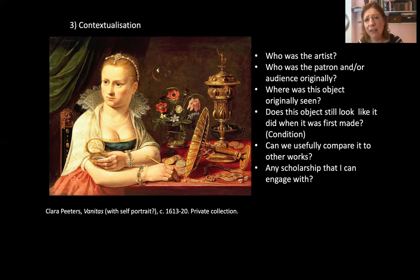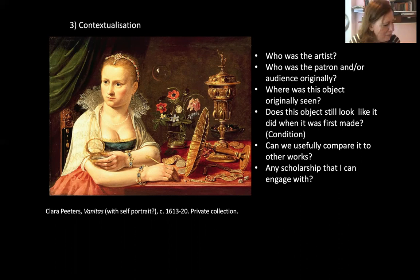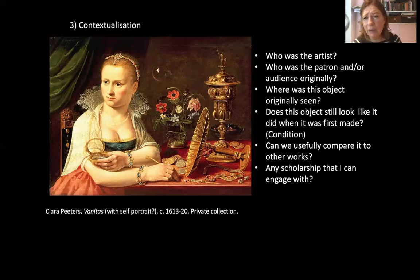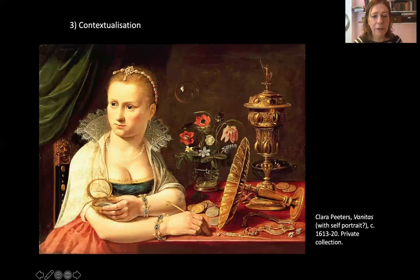Can we usefully compare it to other works? Sometimes image comparisons bring in interesting narratives if you look at different things. I always suggest, even if you're focusing on one image, to bring in comparisons. And is there any scholarship I can engage with, and obviously any primary sources — written primary sources — that we can engage with? This image was made by Clara Peters, whose self-portrait is here. She's one of many female artists working in the late 16th and 17th centuries, and she had an exhibition of her work at the Prado a couple of years ago.